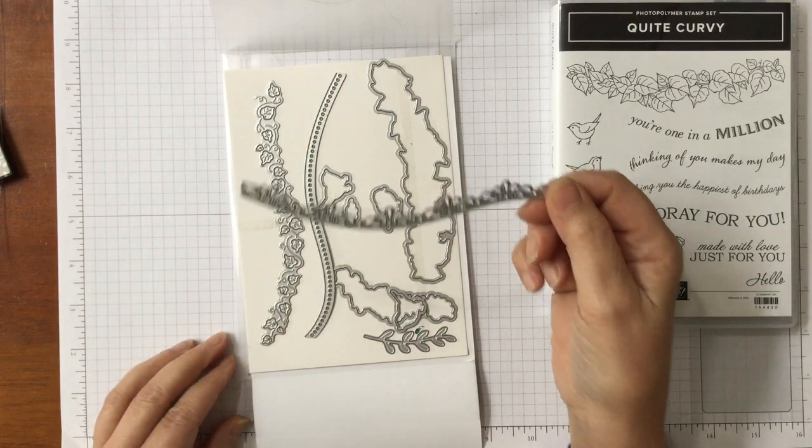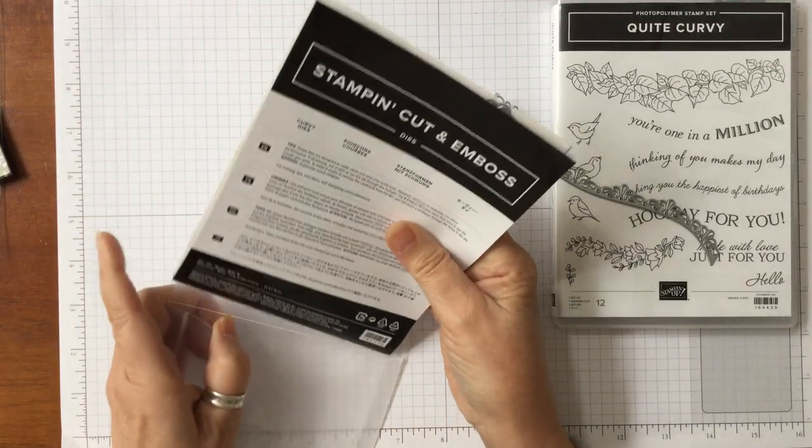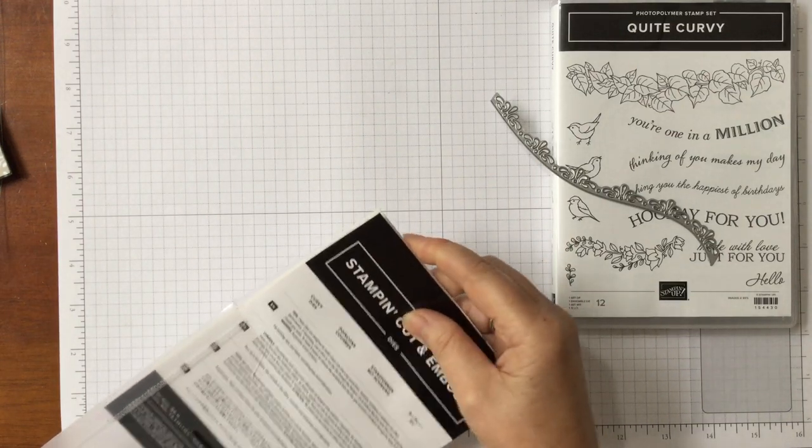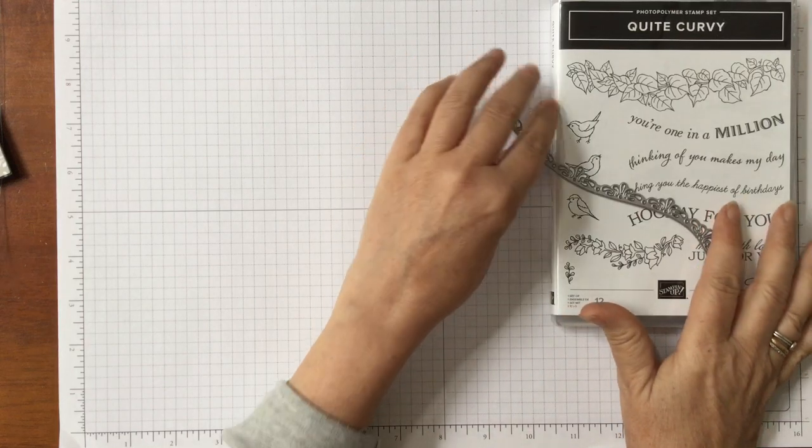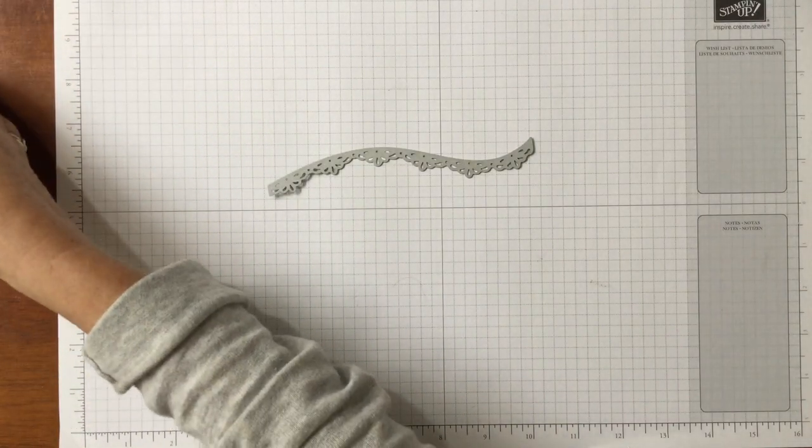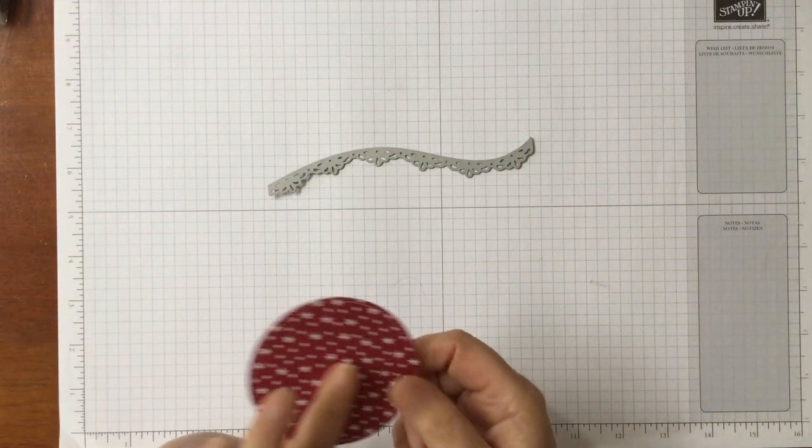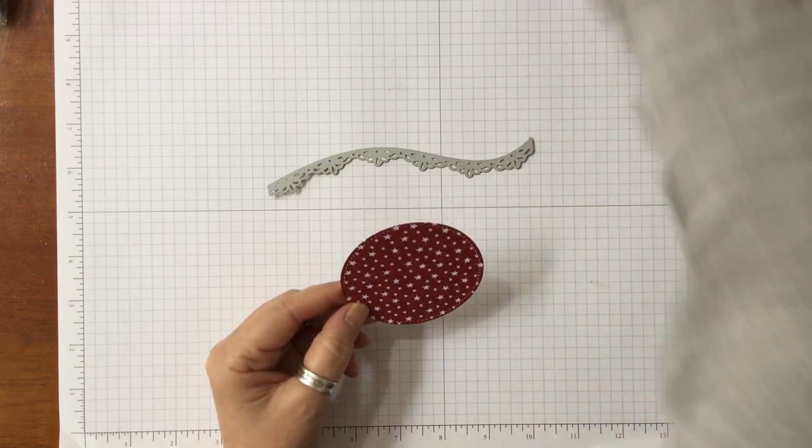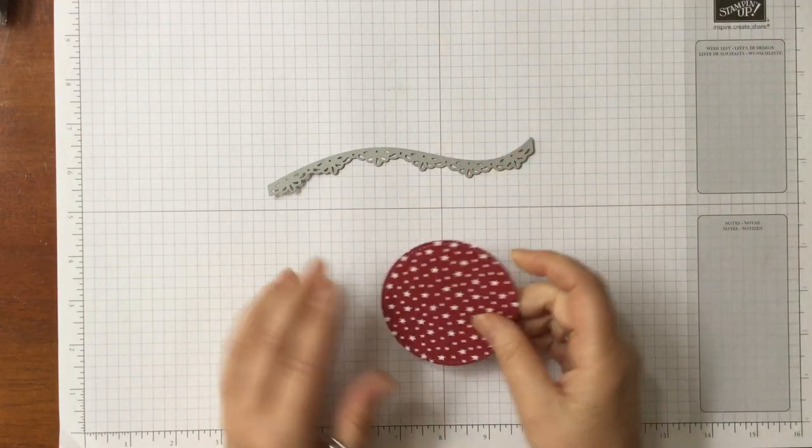We're using this one again today because I absolutely love it and we're going to do something a little bit different but just showing you that you can use this for all sorts of things. We're in a little bit of a Christmas vein at the moment, so we're going to do a card that is Christmassy. The first thing I'm doing out of the designer series paper on the starry side, I have taken the largest stitch shaped framelits and I've just die cut out the circle.